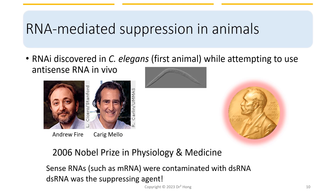It took almost a decade to identify the role of this form of RNA interference as a defense mechanism against plant viruses. Scientists Dr. Fire and Dr. Mello later discovered RNA interference in C. elegans while attempting to use antisense RNA in a whole animal. C. elegans is a small free-living roundworm. They demonstrated that double-stranded RNA molecules can silence a gene by eliminating the messenger RNA corresponding to that gene. Their discovery awarded them the 2006 Nobel Prize in Physiology and Medicine.